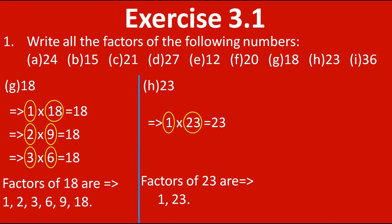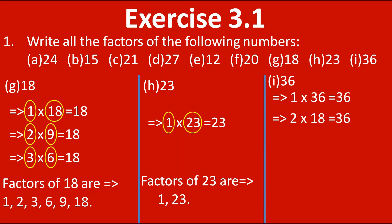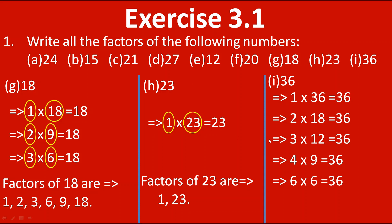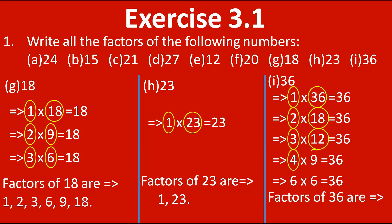Now we will move towards 36. Starting from 1: 1 into 36 gives 36. In the 2's table: 2 into 18 is 36. Next 3: 3 into 12 gives 36. Next 4: 4 nines are 36. In 5's table we have 35, so 36 is not there. Next, 6's table: 6 into 6 gives 36. Now it is reversing, so we stop. The factors of 36 are 1, 2, 3, 4, 6, 9, 12, 18 and 36. Note that 6 appears only once even though it came from 6 into 6.